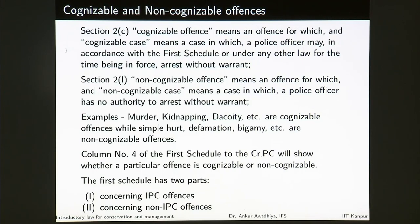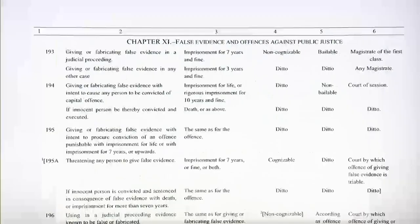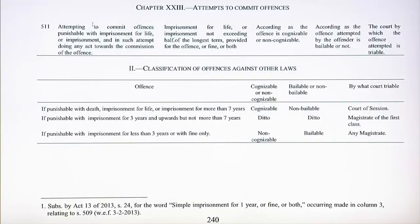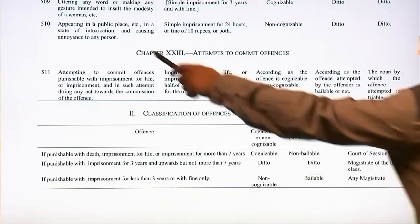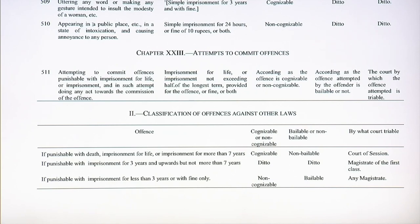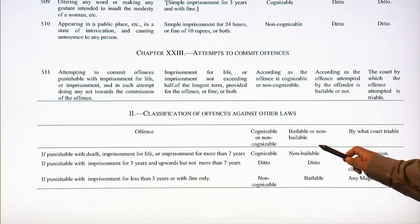The first schedule has two parts. The first part concerns IPC offenses and the second concerns non-IPC offenses — classification of offenses against any other law. Because the CRPC is also applicable for other acts, Part 2 deals with classification of offenses against other laws. If an offense is not mentioned in the particular act regarding cognizability, bailability, or which court it is triable by, then we make use of Part 2 of Schedule 1.